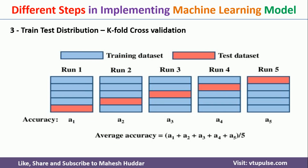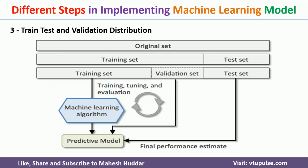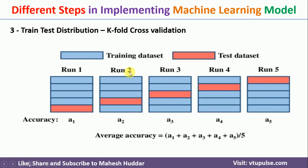A third approach is k-fold cross validation. In simple train/test splitting, certain data is fixed for testing and certain for training, which may introduce bias. To avoid this, the whole data is divided into k groups. For example, as shown in the diagram, the data is divided into five groups. In each of five iterations, one group is used for testing and the remaining four groups are used for training.